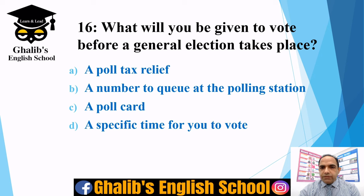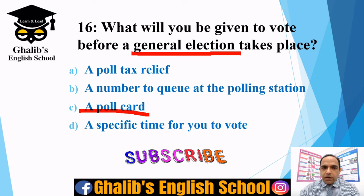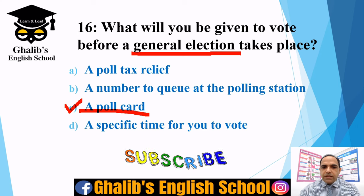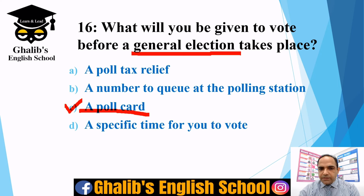Question sixteen: what will you be given before a general election takes place? The options are a poll tax relief, a queue number at the polling station, a poll card, or a specific time to vote. You will be given a poll card. The poll card states your name, your address, and when the election takes place.